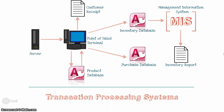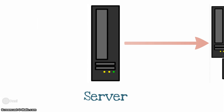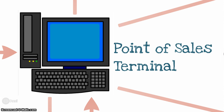We're now going to take a look at how a point-of-sales terminal works in a transaction processing system. The point-of-sales terminal is connected to a server, and that server would obviously be connected to a number of point-of-sales terminals. When you walk into Coles, you see a whole range of them — some of them self-serve, some of them with someone doing the actual processing for you.